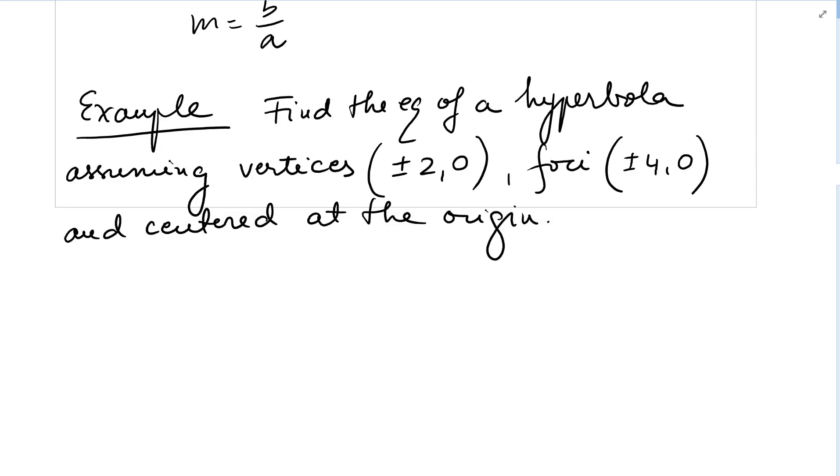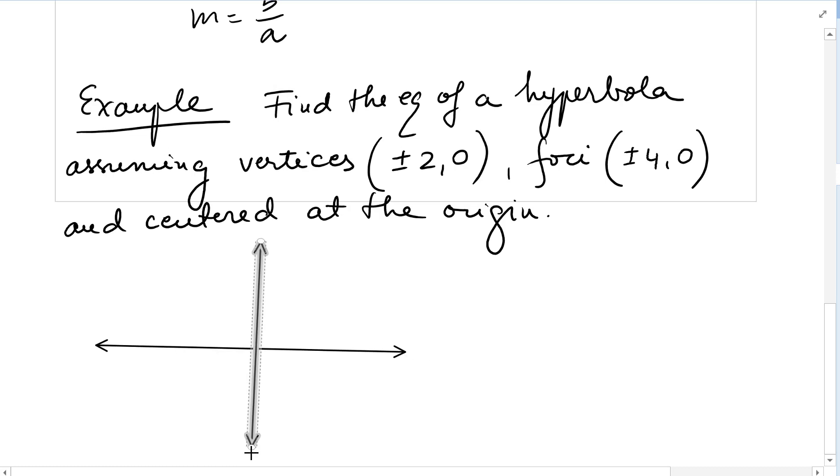Let's solve this example. We want to find the equation of a hyperbola assuming it has vertices (±2,0), foci (±4,0), and is centered at the origin. So the vertices are (-2,0) and (2,0).